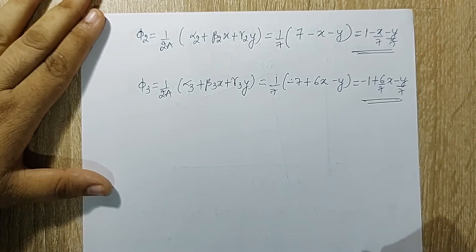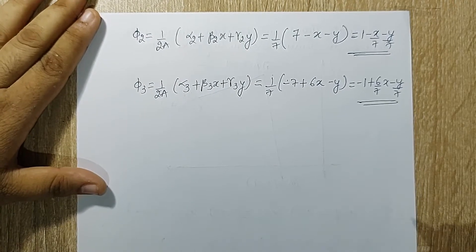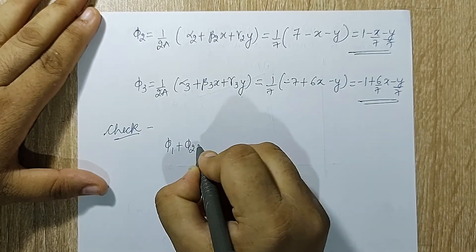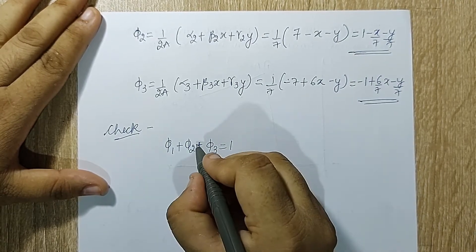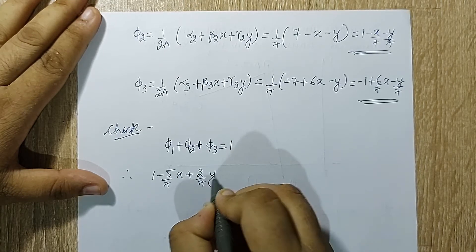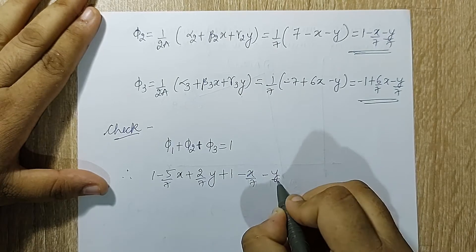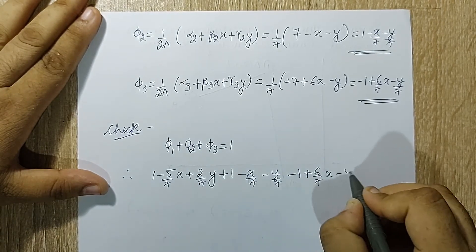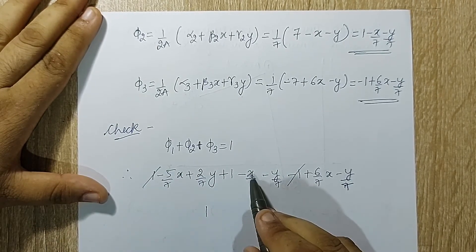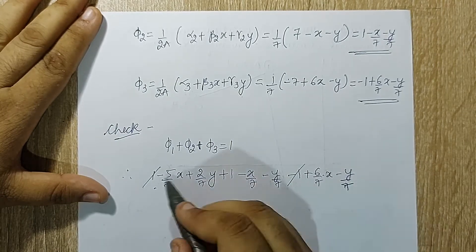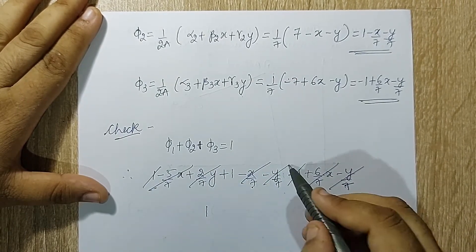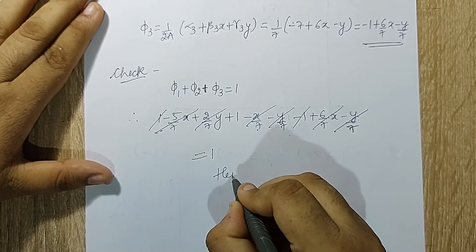After obtaining phi 1, phi 2, phi 3, I need to check. In FEM, the summation of shape functions or interpolation functions is always equal to 1. When I add them: (1 minus 5/7·x plus 2/7·y) plus (1 minus x/7 minus y/7) plus (minus 1 plus 6/7·x minus y/7). The constant terms give 1, the x terms cancel, and the y terms cancel. What remains is 1, hence I have tallied my solution.